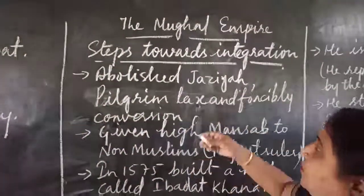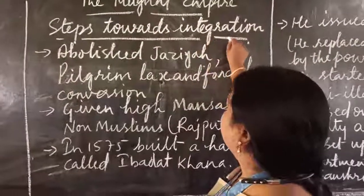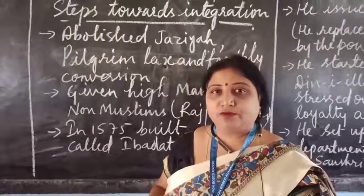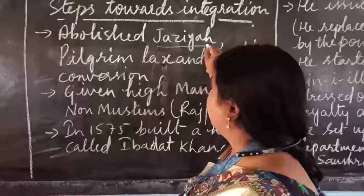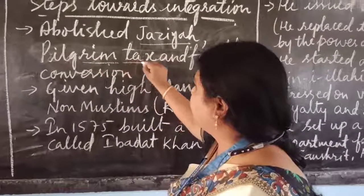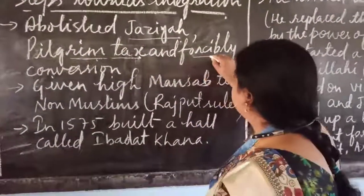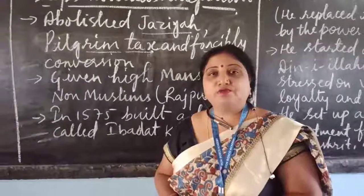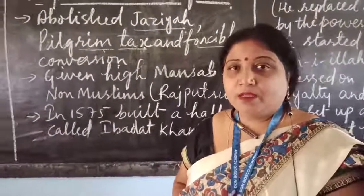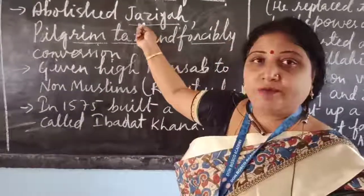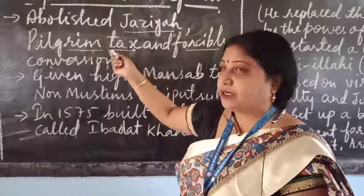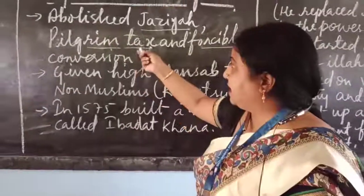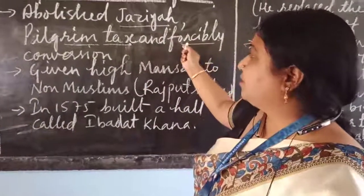Next, steps taken towards integration, reflecting his liberal attitude. He abolished Jizya, the tax imposed on non-Muslims. He abolished the Pilgrim tax — Hindus had to pay an extra tax to bathe in Prayag and Banaras, and he removed that. He also abolished forcible conversion to Islam, which had been practiced on war prisoners before Akbar's reign.